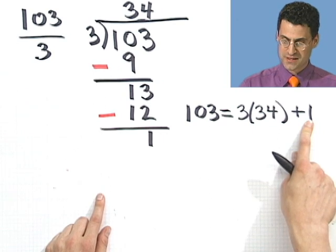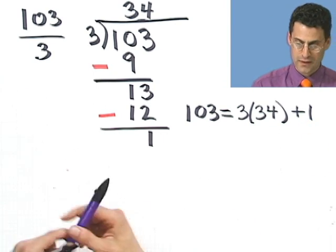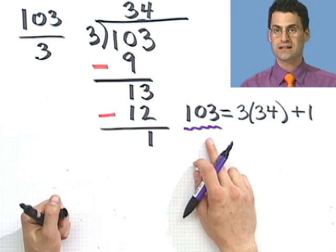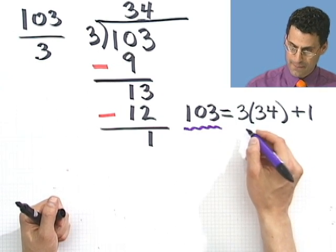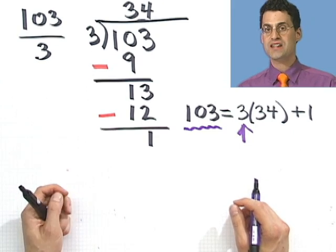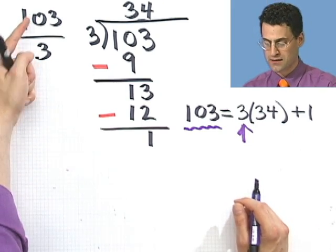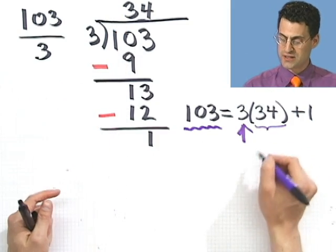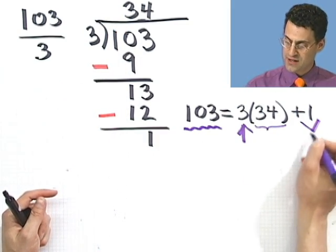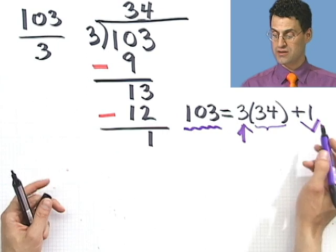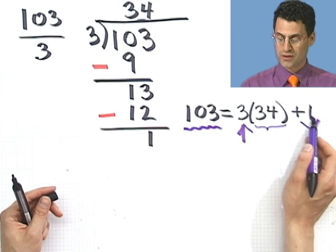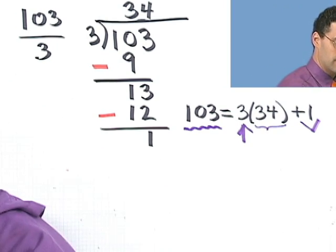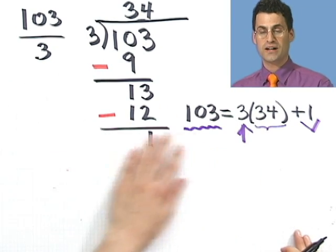So there's some names for these things. This thing here is called the dividend. That's the dividend. This thing here is called the divisor, because I'm dividing that in. This thing here, the answer that we got, is called the quotient. And this last thing right here is the remainder. And the remainder is always smaller than the divisor. OK, so that's basically a sort of review of, you know, elementary school long division.